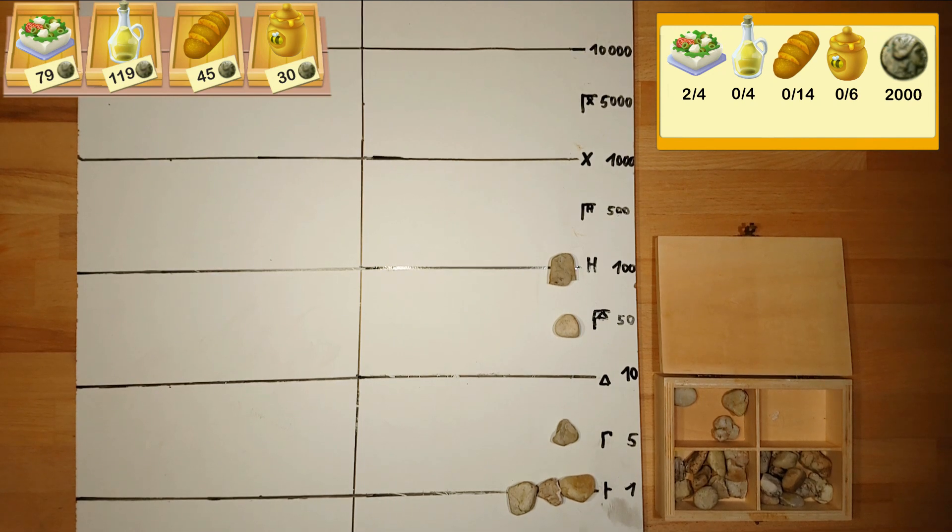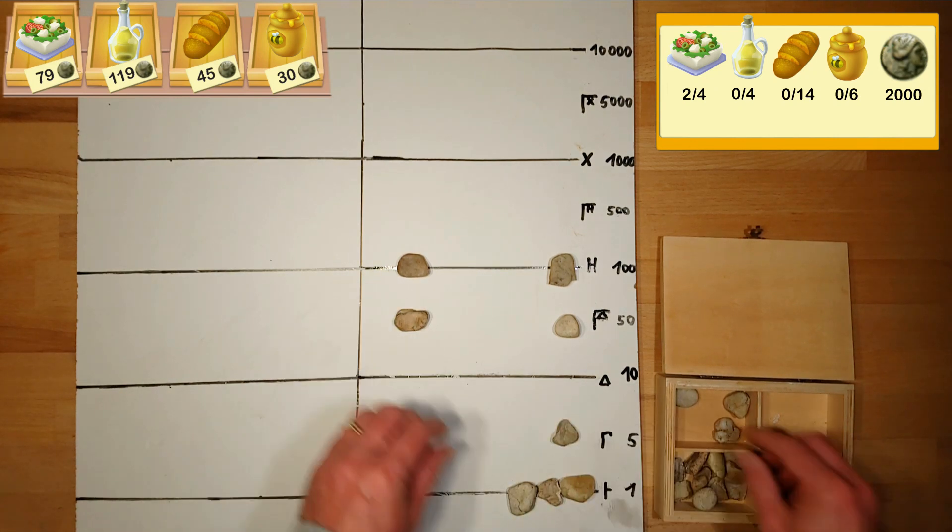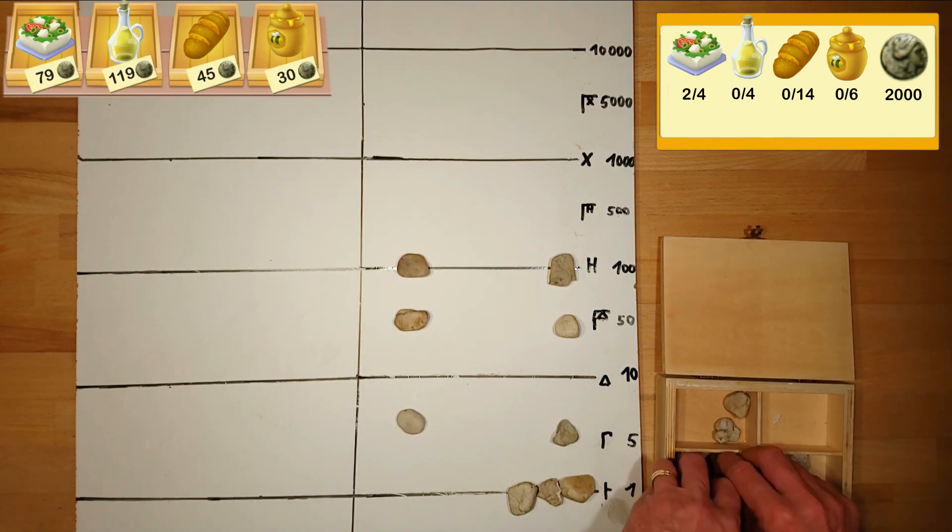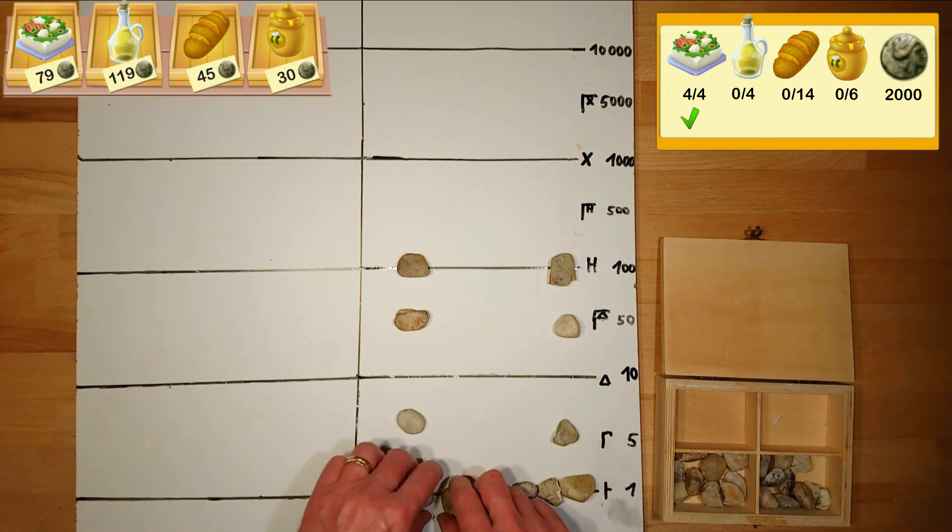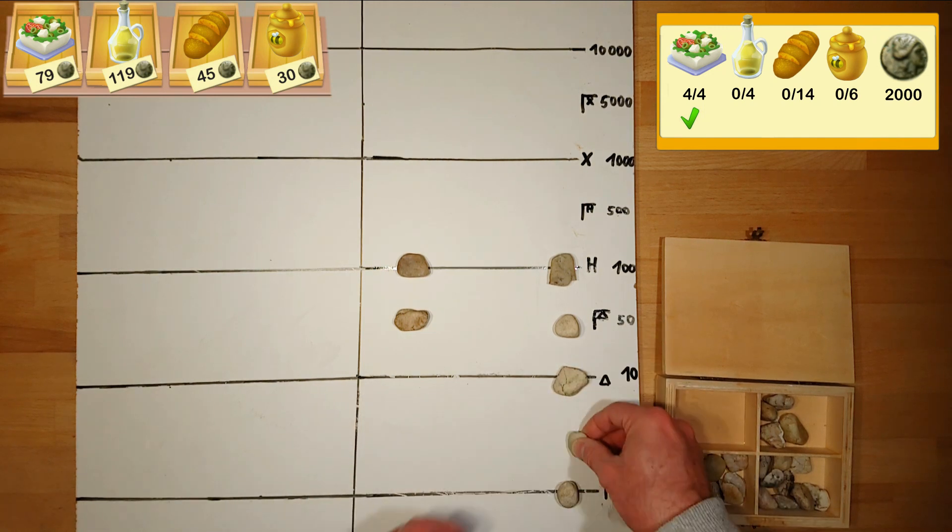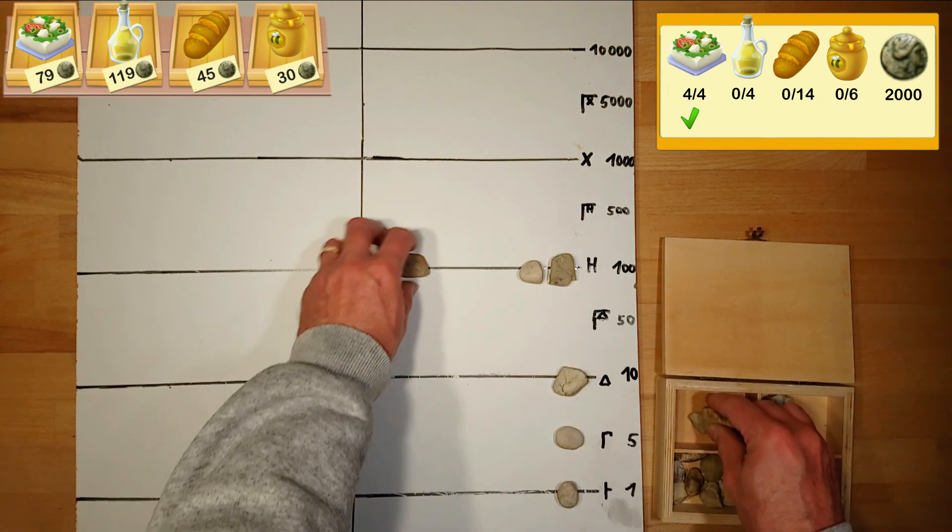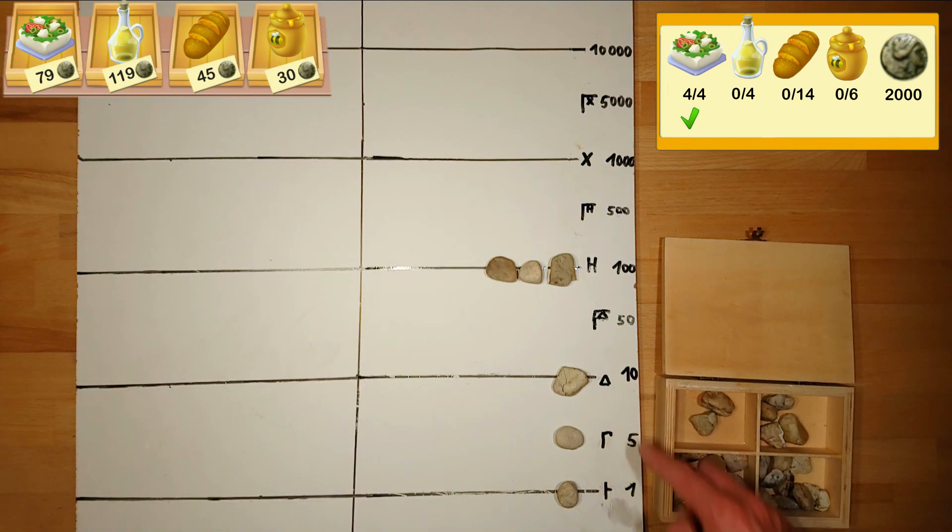In total we want four feta cheese, twice as much as it's already on the table. Therefore we simply multiply each pebble by two. Then we sum up again and put the result on the right side of the board. The price for four feta cheese is 316 coins.